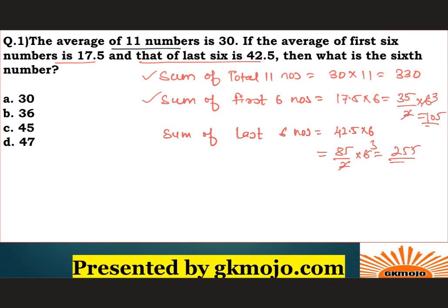So if we add the sum of the first 6 and the last 6, there will be a total of 12 numbers, but there are only 11 numbers. So we can find the sixth number by adding 105 and 255, then subtracting the sum of 11 numbers, that is 330. This gives you the value of the sixth number, which is 30 — option number E.